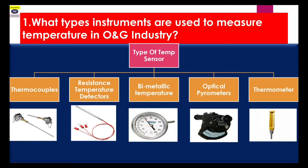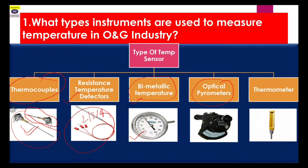The first question is: what type of instruments are used to measure temperature in oil and gas industry? Generally, thermocouple is used. Also RTD — Resistance Temperature Detector — which may be two-wire, three-wire, and four-wire. Temperature gauges such as bi-metallic types are also used, and optical pyrometers are used when temperature is beyond 1300 degrees or where thermocouple and RTD cannot be used. Thermometers are also used. So these five types of temperature measuring instruments are generally used.